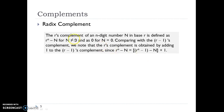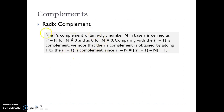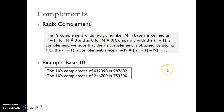Now, what is the radix complement? The radix complement of any n-digit number N in base R is defined as R to the n minus N, for N not equal to 0, and as 0 when N is 0. Comparing with the R-1's complement, we note that the R's complement is obtained by adding 1 to the R-1's complement, since R to the n minus N equals R to the n minus 1 minus N plus 1. So we are just adding 1 to the R-1's complement to find the R's complement, as will be obvious from the following example.